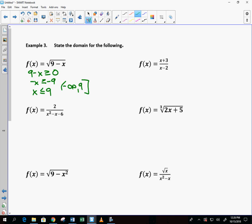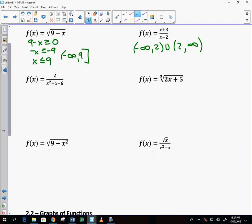Got that? Why isn't this one all real numbers? Can't divide by 0. So we've got to eliminate 2. So negative infinity to 2, union with 2 to infinity. Why isn't that one all real numbers? Can't divide by 0. What values would give you 0? Yeah, so I eliminate negative 2 and I eliminate 3.